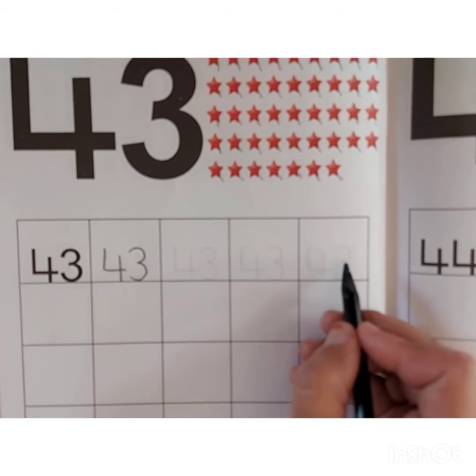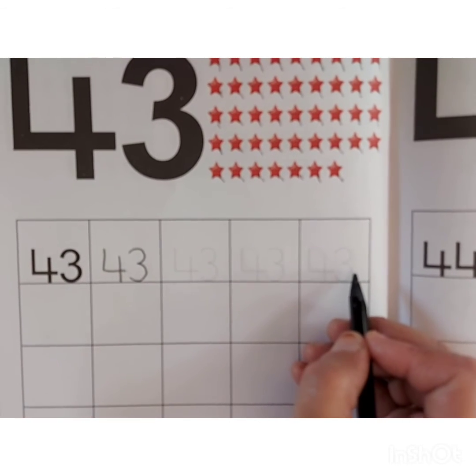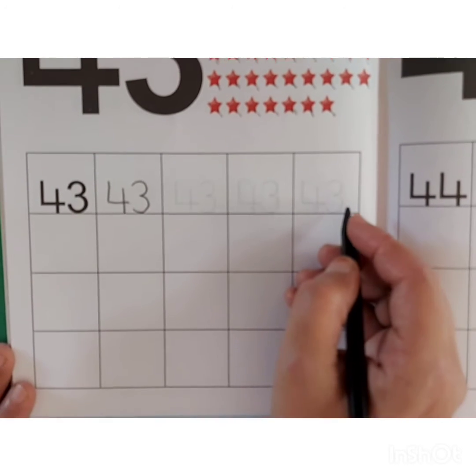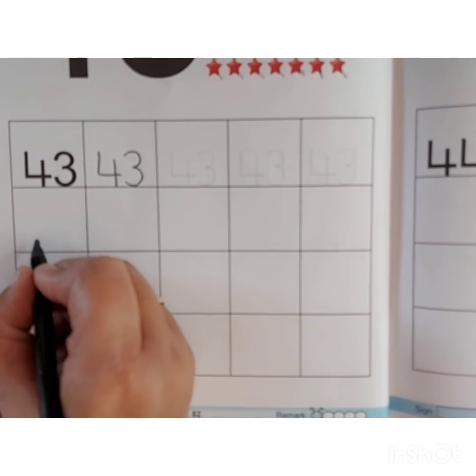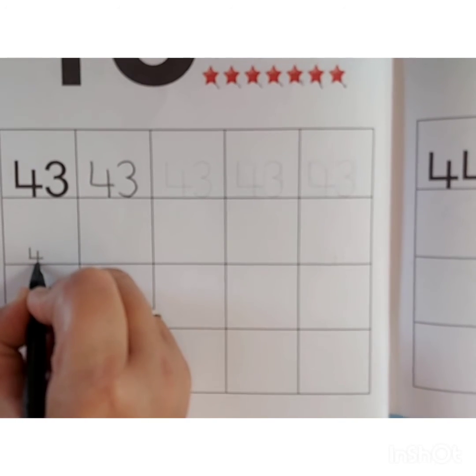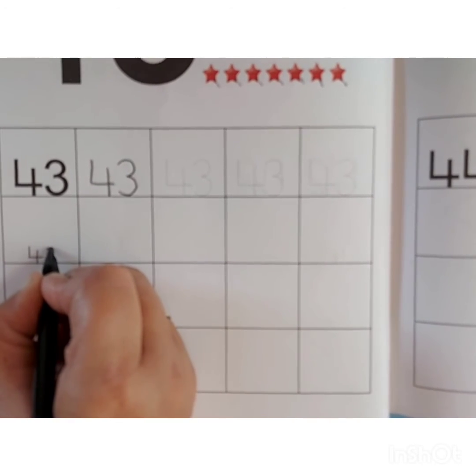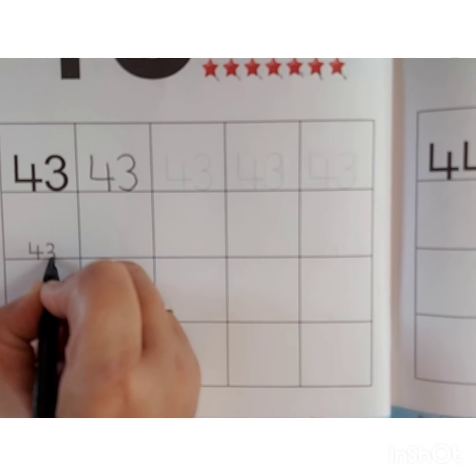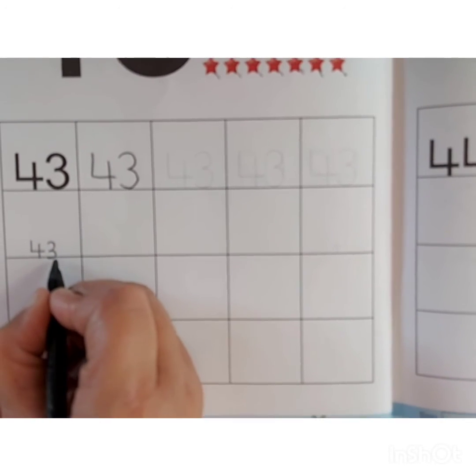Like this way you have to complete this line. Now we will write number 43 in this box. First we will write number 4. Touch the down line. And then number 3. 43. Like this way you have to complete all these boxes.